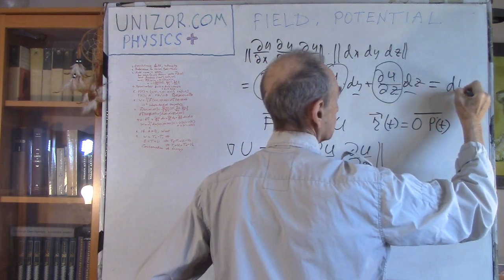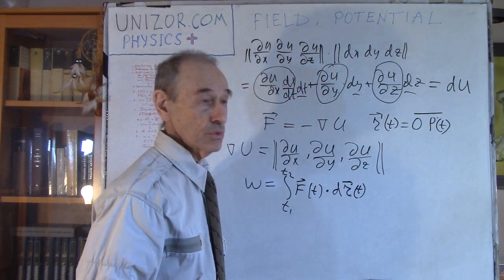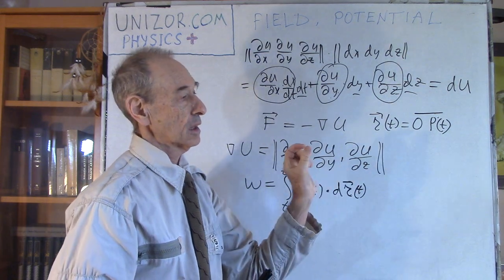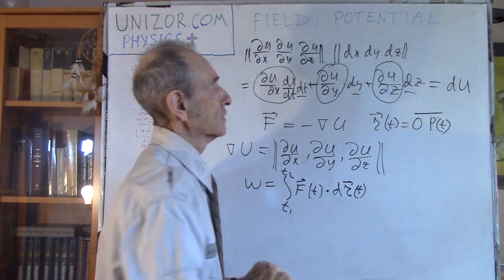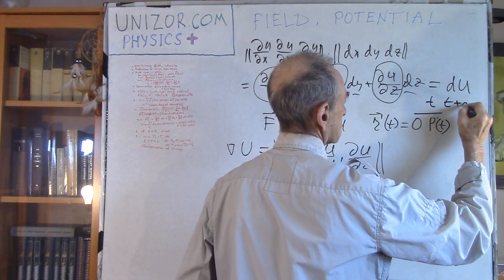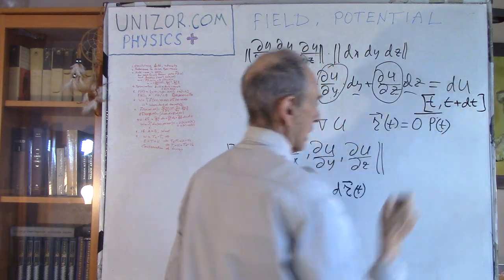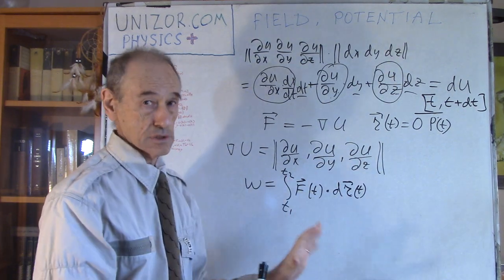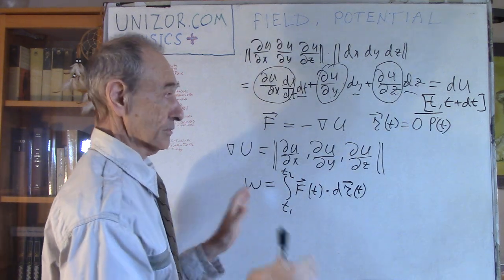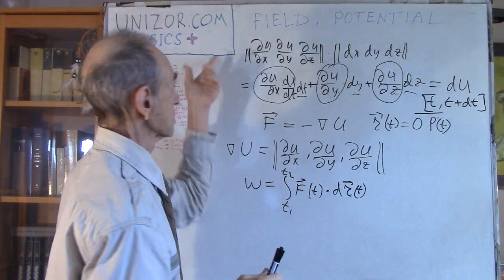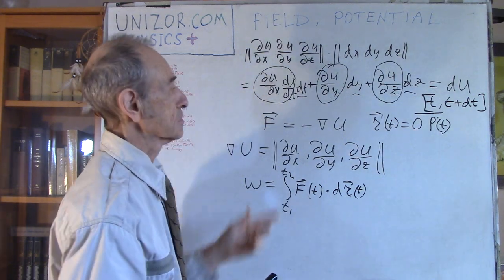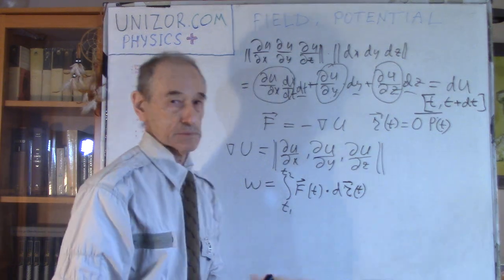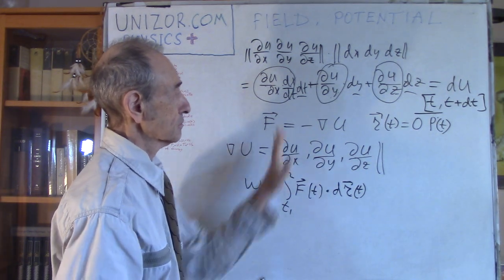So it is the full differential of U representing the infinitesimal increment of U over time from t to t+dt. I am using calculus and vector terminology relatively freely here - I assume this is supposed to be known. If not, you can go back to the prerequisite courses - Math for Teens and Physics for Teens on the same website - to review this material.